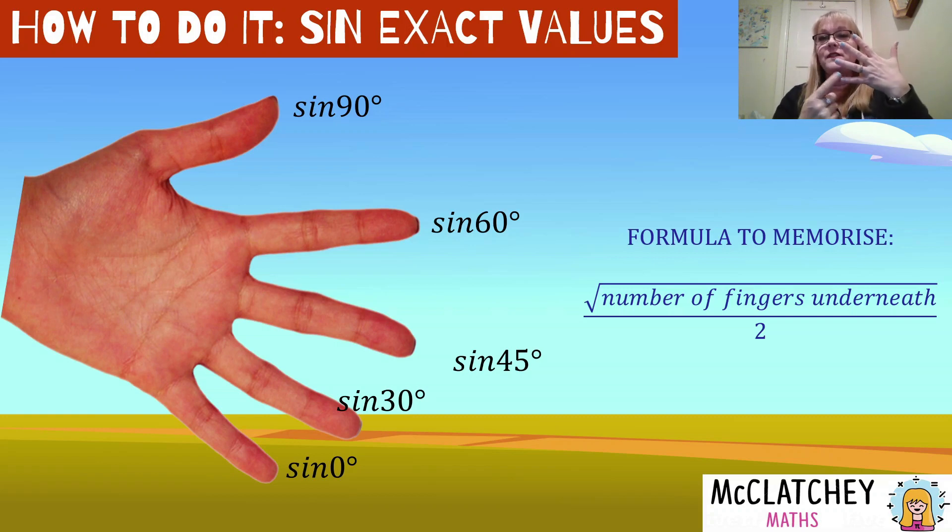Firstly, for sine of zero. If I hold that finger in, which I'm not very flexible, can't do that easily. But I have no fingers underneath zero. So the top of my formula will be zero, square root of zero over two, and we know that just makes zero. So the sine of zero is going to be zero.